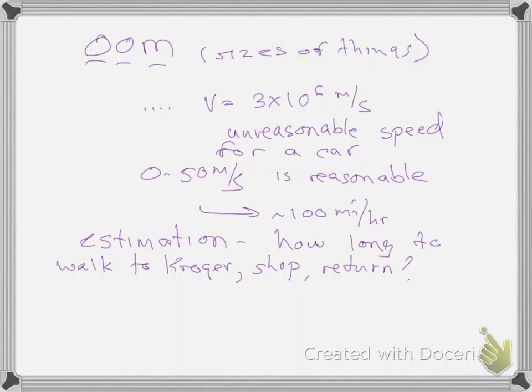Order of magnitude estimation. You can do as accurate an estimation as you want, but order of magnitude just means to a factor of 10. So, for example, is it one mile to Kroger? Is it 10 miles to Kroger? Is it a tenth of a mile to Kroger? Or is it more or less? That's a factor of 10. It is approximately a mile to Kroger. It's two, but to order of magnitude is one mile to Kroger.